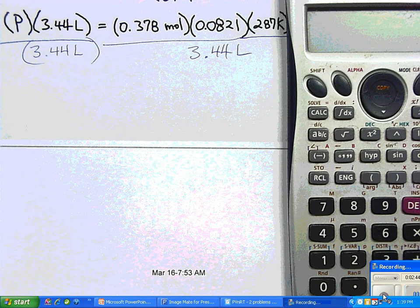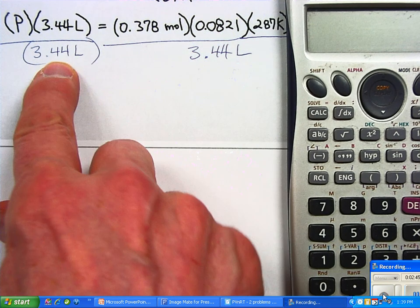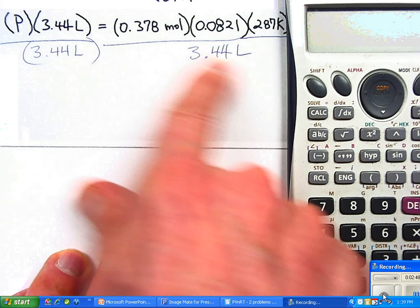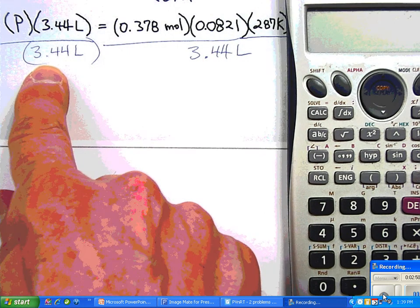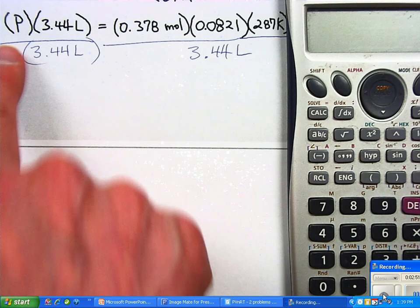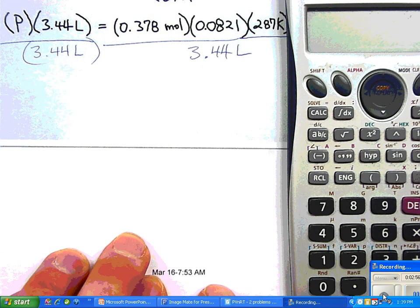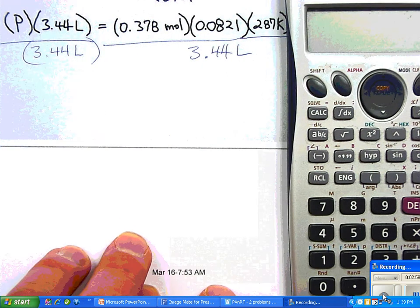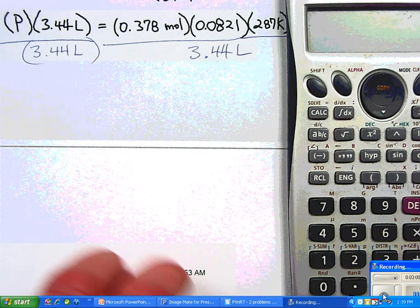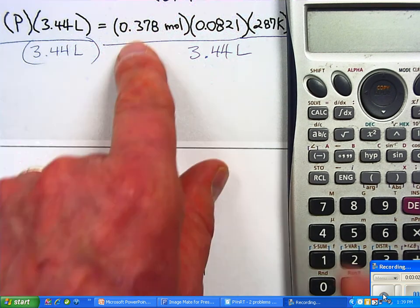So after we finished off, I wrote in 3.44 liters, dividing both sides by the 3.44 liters, so we could isolate our P, which is going to be our pressure. And that will come out in atmospheres. So let's go ahead and run these numbers.